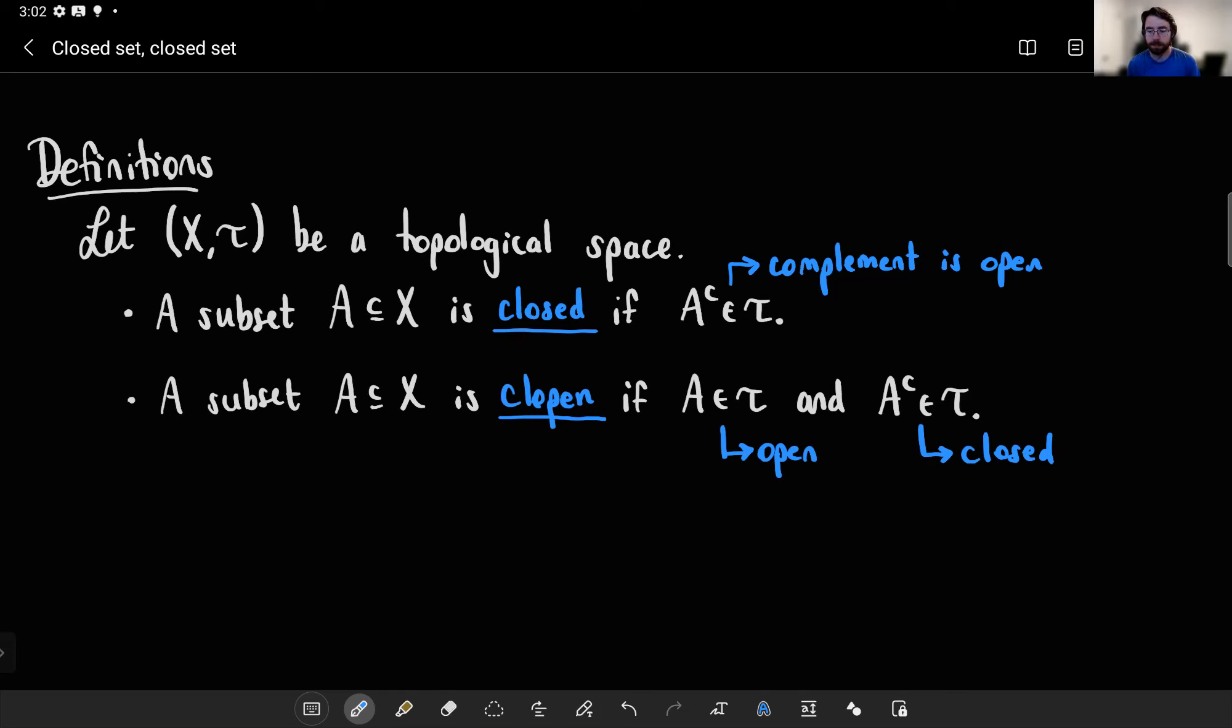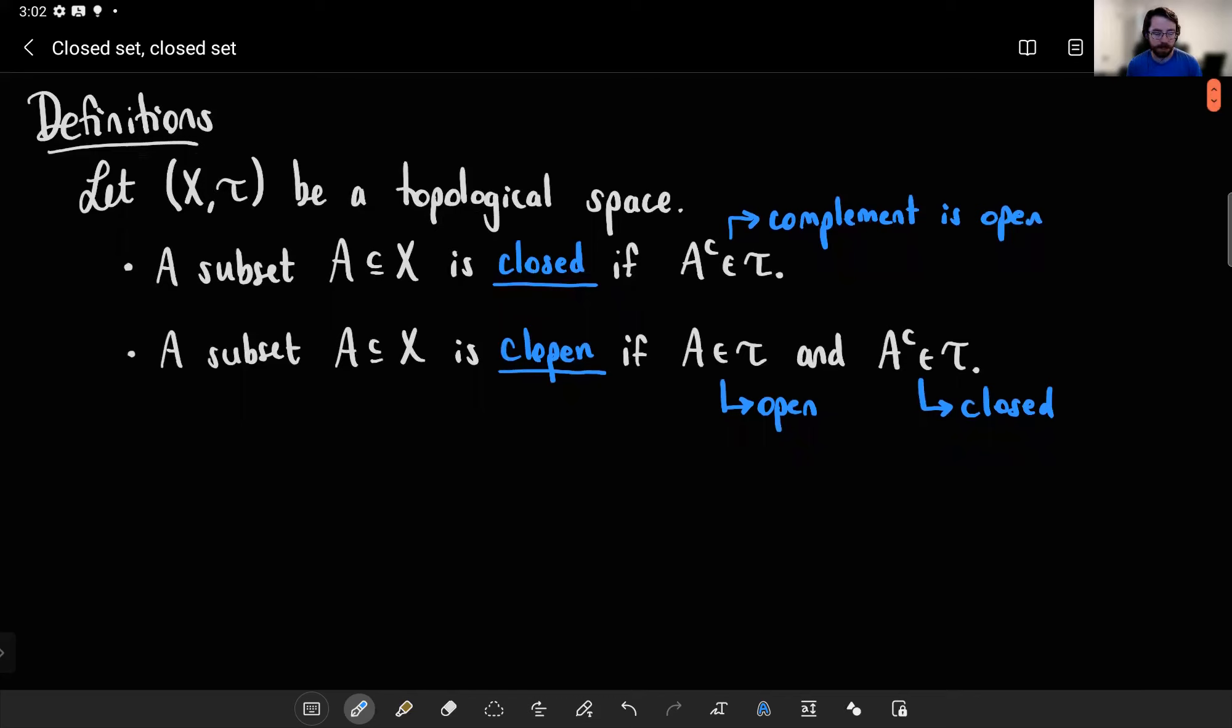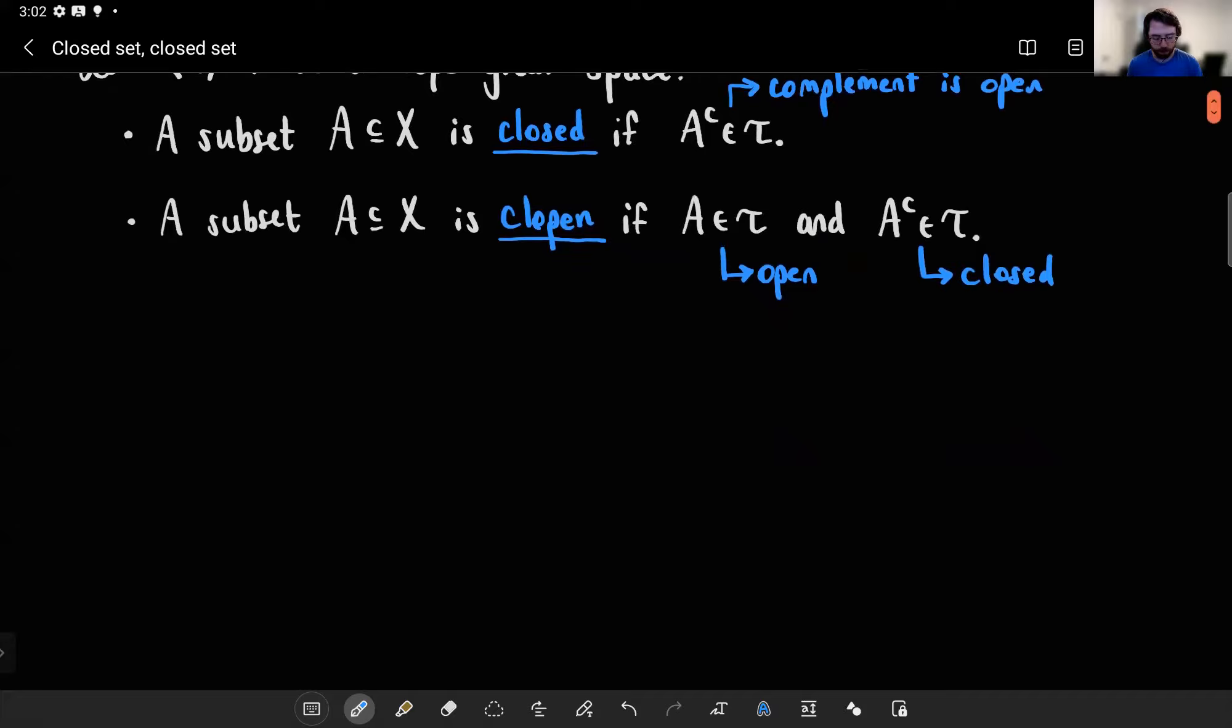But it all comes down to just knowing what the topology is. That defines an exhaustive list of what the open sets are. And if you just take the complement of every open set, you'll get a list of all the closed sets. So you can check, usually with some ease, if a set is open or closed, unless your topology is pretty weird.